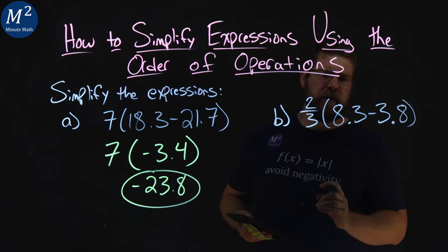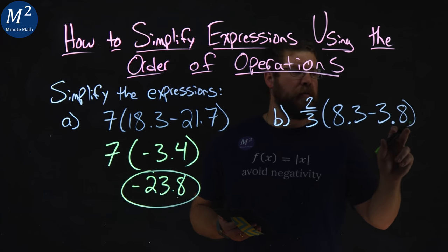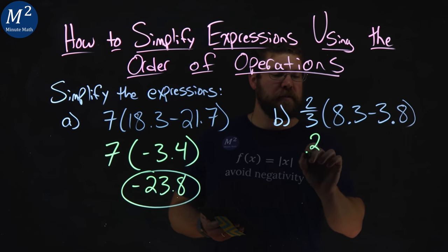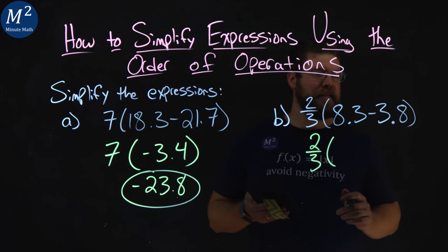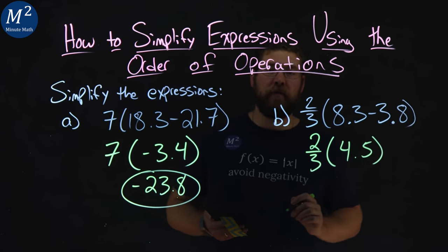Part 2. Two thirds times 8.3 minus 3.8. Parentheses come first, so the two thirds stays on the outside. 8.3 minus 3.8 is 4.5 right there.